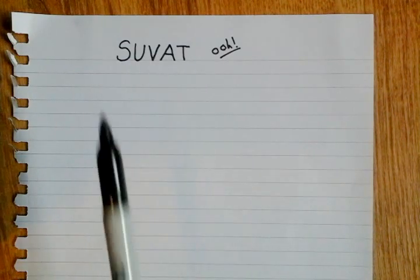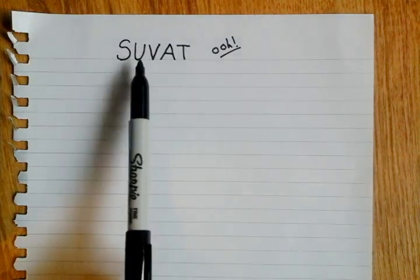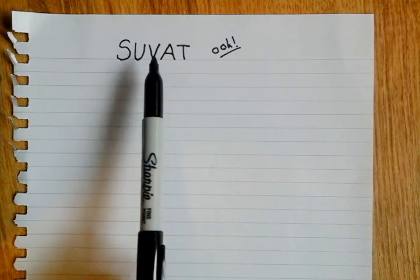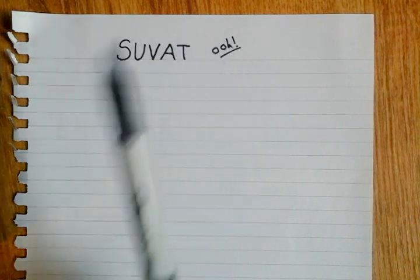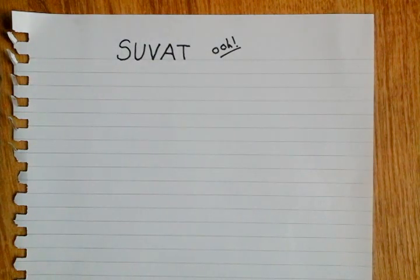We've got the SUVAT equations because we've got displacement, initial velocity u, final velocity v, acceleration, and time, and a bit of excitement because that's what we need to derive it.